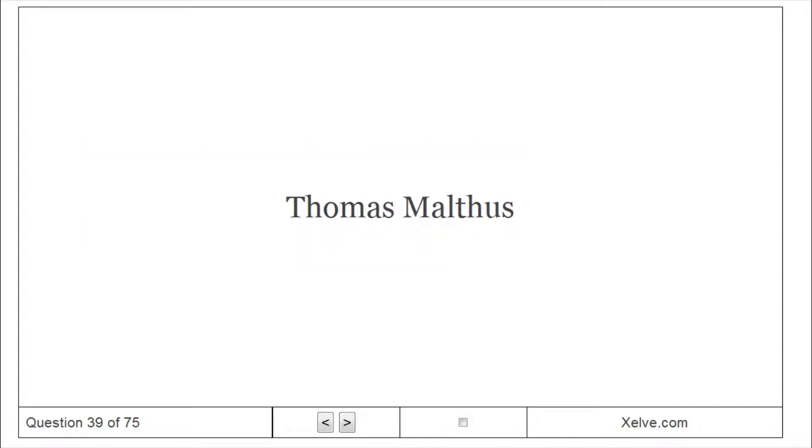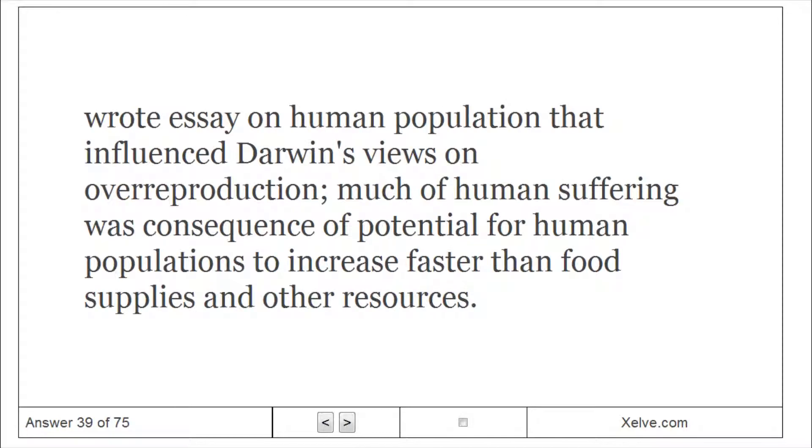Thomas Malthus: Wrote essay on human population that influenced Darwin's views on over reproduction. Much of human suffering was consequence of potential for human populations to increase faster than food supplies and other resources.